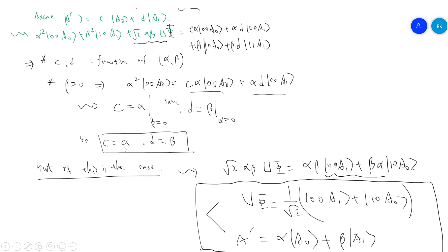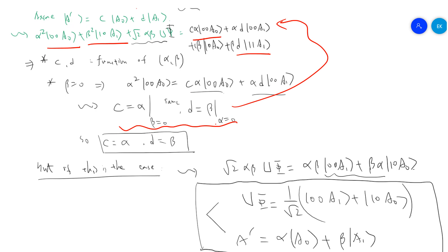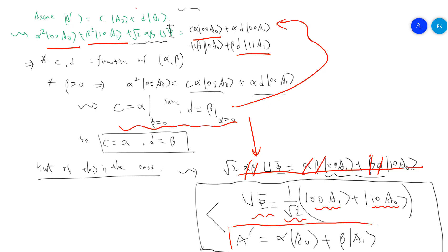It is easy to guess that c = α and d = β since α and β can be arbitrary. With this, the matched terms cancel, and the cross terms give: √(αβ)·U|φ⟩ = αβ|00⟩|a₁⟩ + βα|10⟩|a₀⟩. Cancelling αβ: U|φ⟩ = |0⟩|0⟩|a₁⟩ + |1⟩|0⟩|a₀⟩. And your |a'⟩ = α|a₀⟩ + β|a₁⟩.